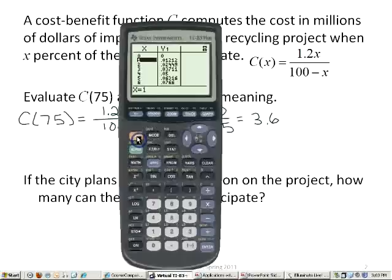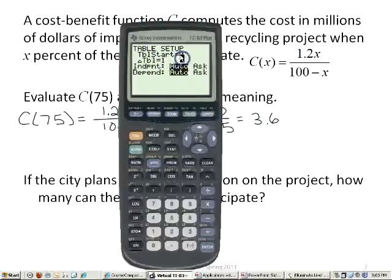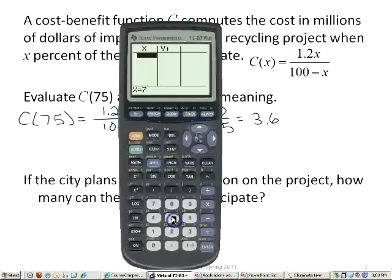A function that will make it easier is if you put your calculator in ask mode. Do second, window, and you see table set up. Move your cursor down to where it's highlighted on independent ask, and press enter. Now do second, graph, to go to your table. And you can put in any value you want for x. If I were going to have to do this problem and find the value at several different x values, this would be a very efficient way to do it. I can put in any numbers I want.